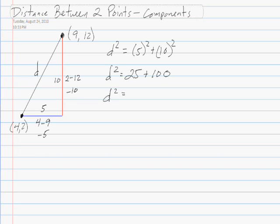d squared is equal to 125. d is equal to the square root of 125.